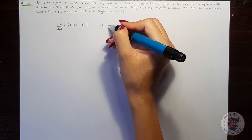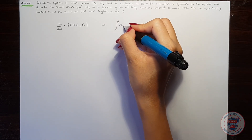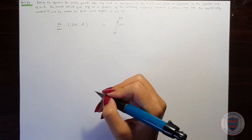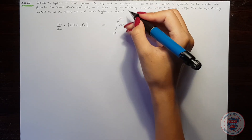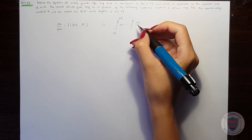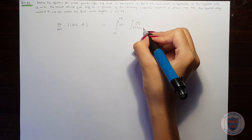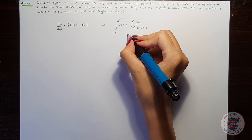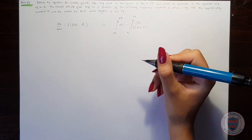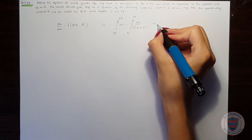When we make some arrangements, we see that the integral of dN from N-initial to N-final will be equal to the integral of dA over the function of delta K and R, from the initial crack length to the final crack length. And this will be equal to N_f.